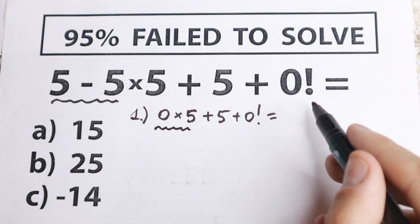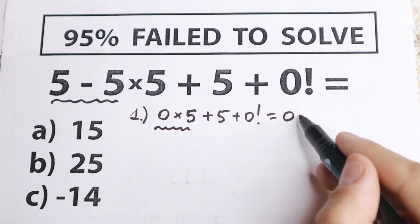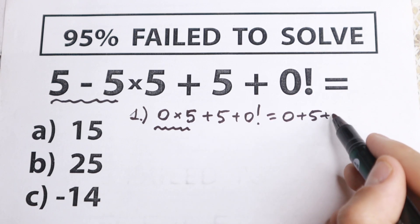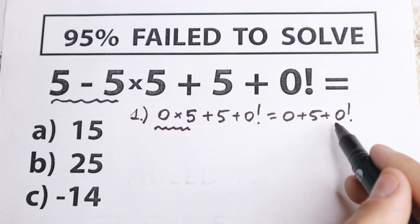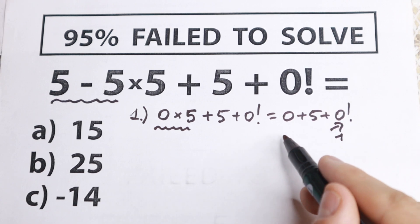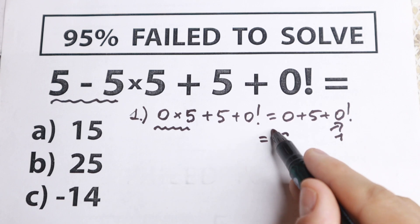If we multiply this 0 by 5, we'll have 0 + 5 + 0 factorial. We all know that 0 factorial equals 1, so we have 5 + 1 = 6.